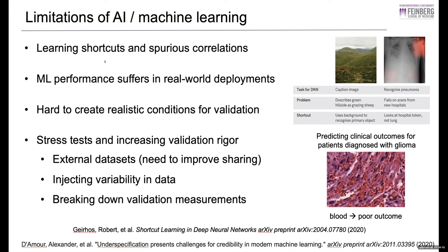We see this in self-driving cars and a lot of systems deployed in the real world. A paper from Google deals with this issue, talking about the importance of stress tests and increasing the rigor of validation. In pathology, probably the most important stress test is external datasets — we need to get better at sharing data to look at how algorithms perform in other conditions. Also injecting variability by artificial means using GANs, scanning slides on multiple scanners, and breaking down validation measurements not just by the whole dataset but by subsets — how does it perform on men versus women or different histologic subtypes.